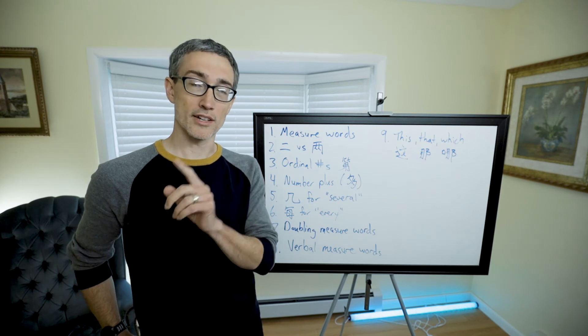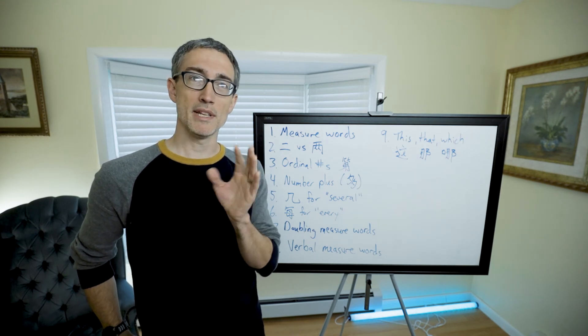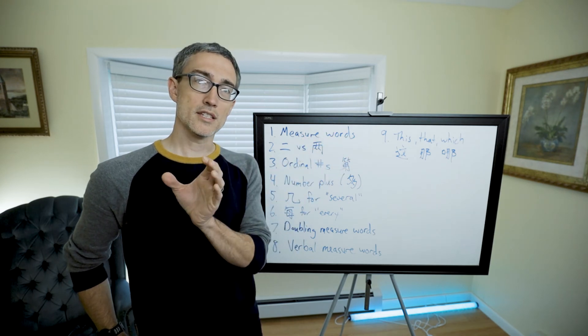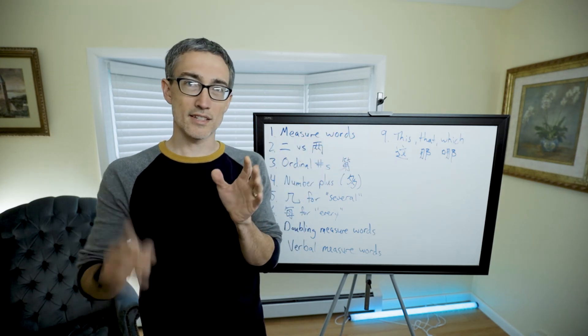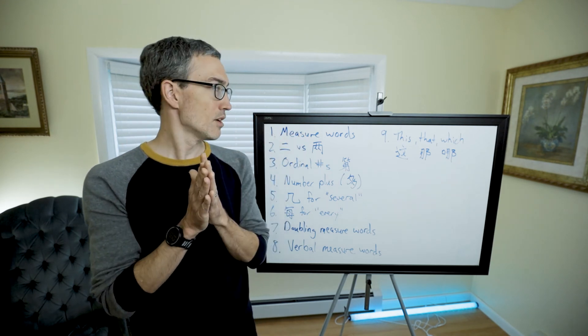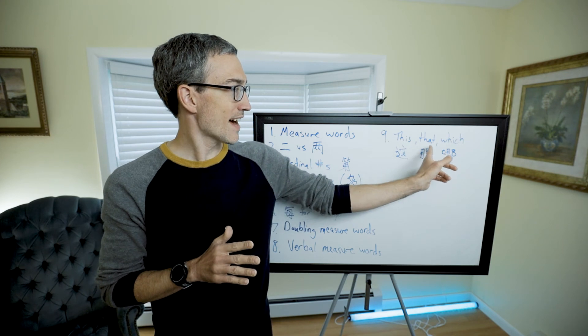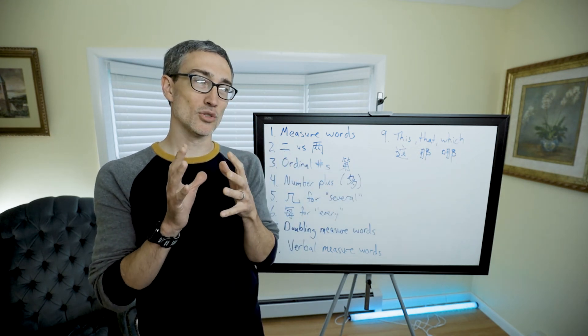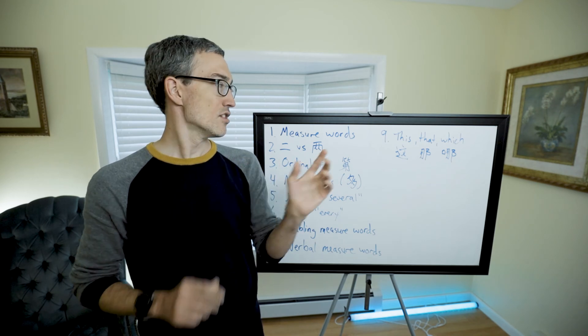You might remember 些 (xiē). It was near the end of HSK 2, actually. We talked about 一些 (yīxiē) meaning some or a small number of, you know, a bit of. 一些 (yīxiē). So that's 些 (xiē). It means some amount of. You can also put 些 (xiē) after this, that, or which, which makes that into a plural thing.